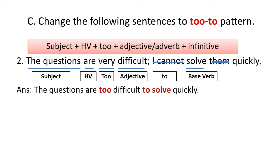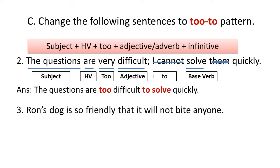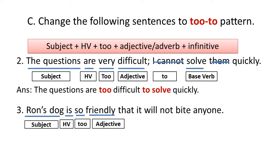The answer is: 'The questions are too difficult to solve quickly.' Let's take another example: 'Ron's dog is so friendly that it will not bite anyone.' This is a complex sentence and we have to convert it into a simple sentence. 'Ron's dog' is the subject, 'is' is the helping verb. Replace 'so' with 'too.' 'Friendly' is an adjective, so now we have to use an infinitive.